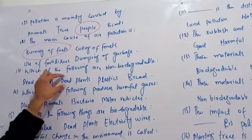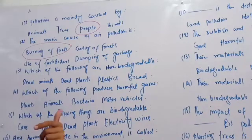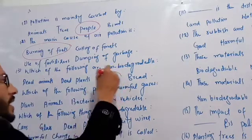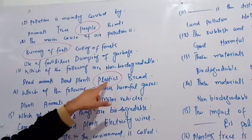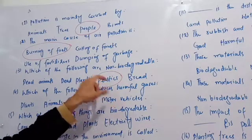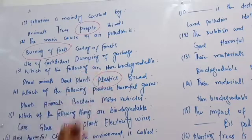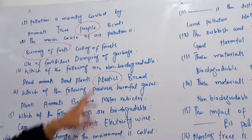Dead plants can be decomposed. Plastics, however, are non-biodegradable — they take about 1000 years to decompose. Therefore, plastic is classified as non-biodegradable.